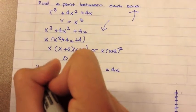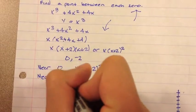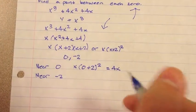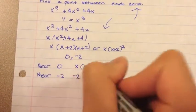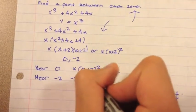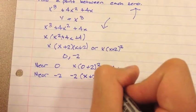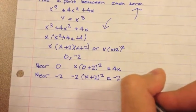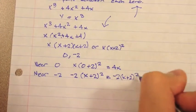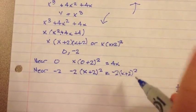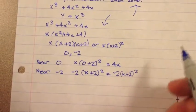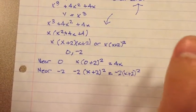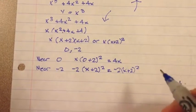and then near negative 2, you're going to plug that into the same equation, and then you will get negative 2 times x plus 2 squared. And since it has an even multiplicity, we know that the parabola will touch through the graph.